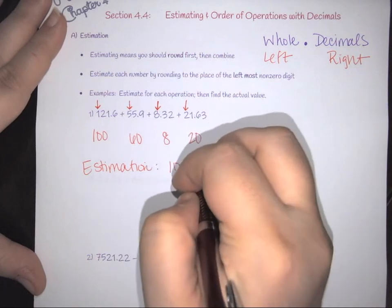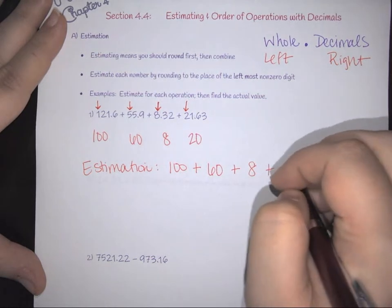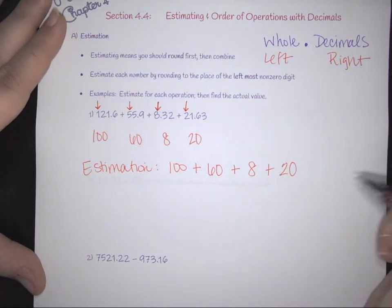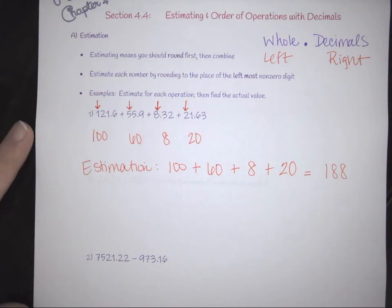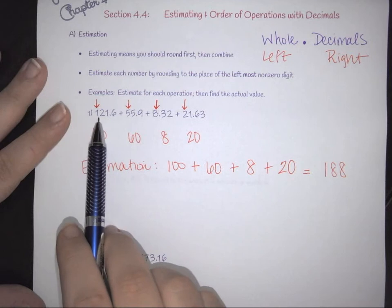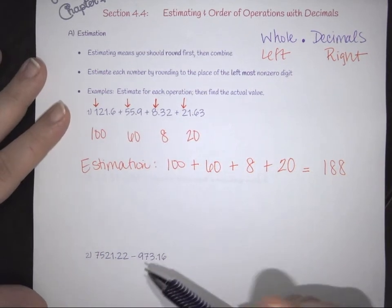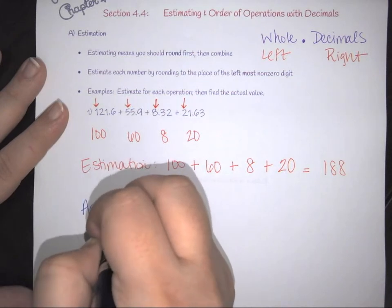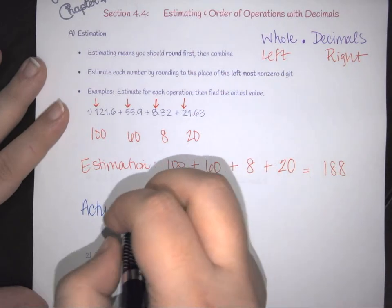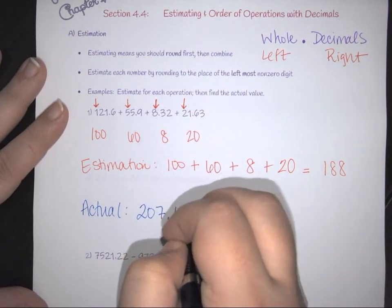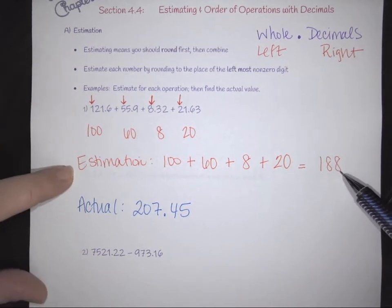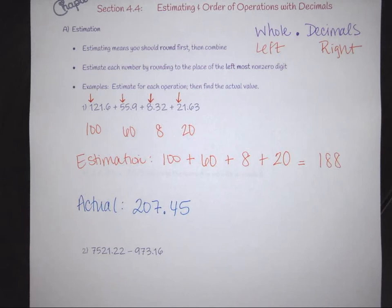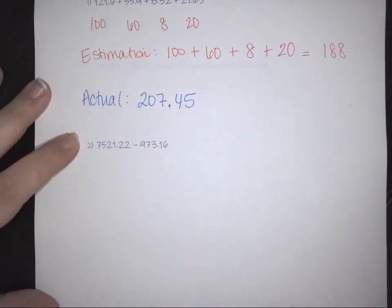The estimation is found by taking 100 + 60 + 8 + 20, which gives you 188. The actual value, found by adding all the original digits using a four-function calculator, comes out to 207.45. The point is not that the numbers are far apart — it's that we're using an estimation method through rounding to complete the process.